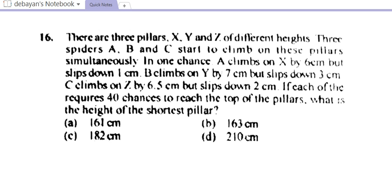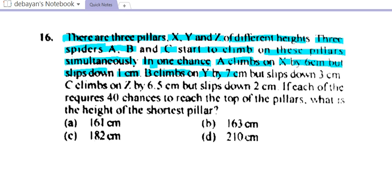We have a question here. There are three pillars X, Y and Z of different heights. Three spiders A, B and C start to climb on these pillars simultaneously. In one chance, A climbs on X by 6 cm but slips down 1 cm. B climbs on Y by 7 cm but slips down 3 cm. And C climbs on Z by 6.5 cm but slips down 2 cm. If each of them requires 40 chances to reach the top of the pillars, what is the height of the shortest pillar?